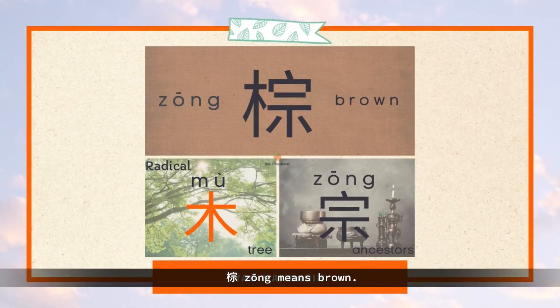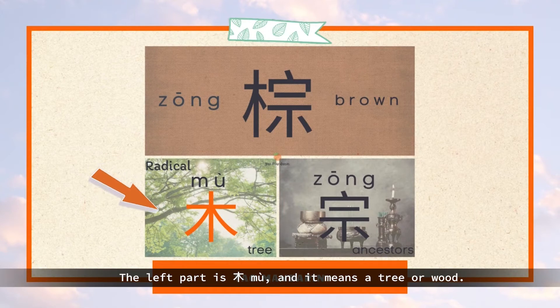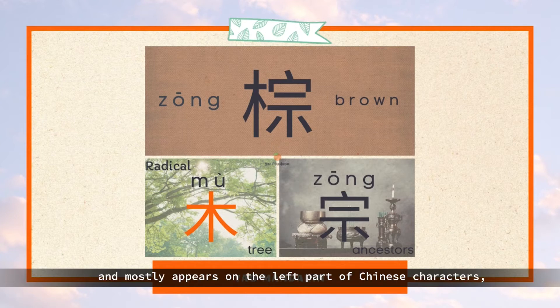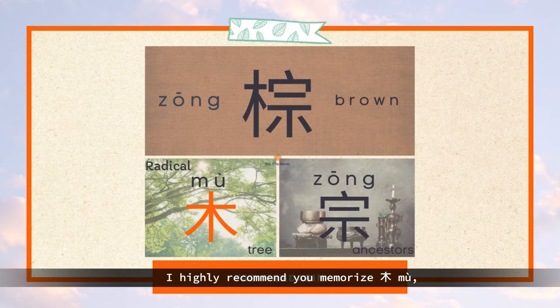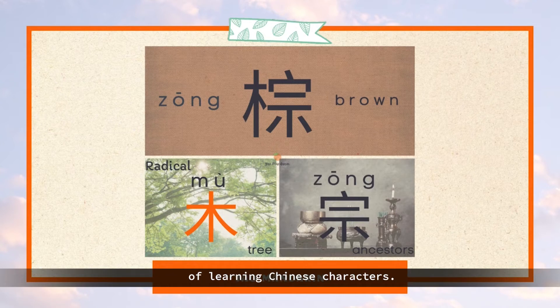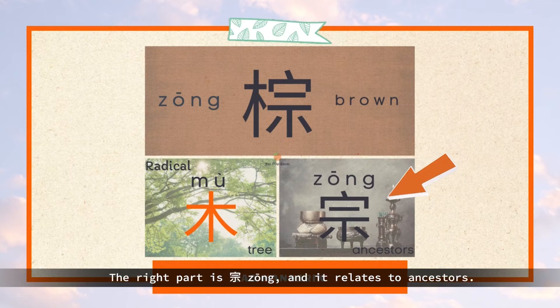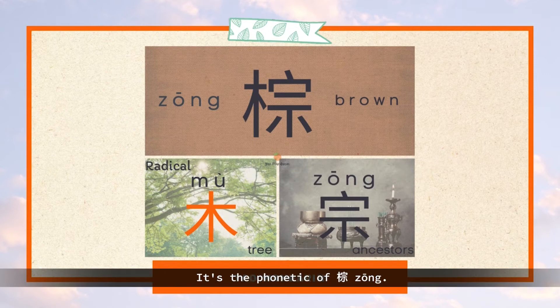棕 means brown. The left part is 木, which means a tree or wood. 木 is a widely used radical, mostly appearing on the left part of Chinese characters, such as 棕. I highly recommend you memorize 木, as you will see it often in your future journey of learning Chinese characters. The right part is 宗, which relates to ancestors — it's the phonetic of 棕.